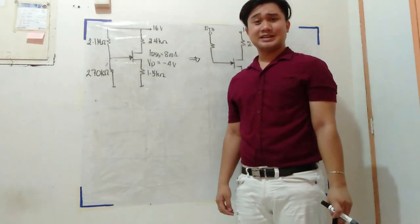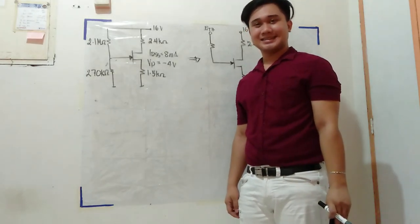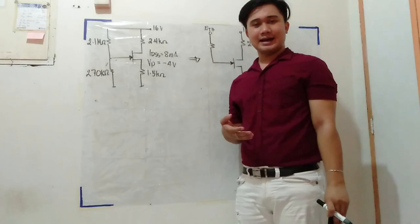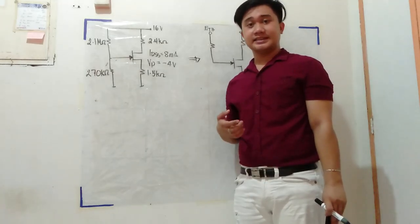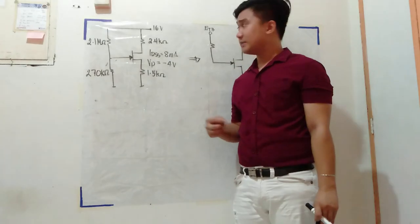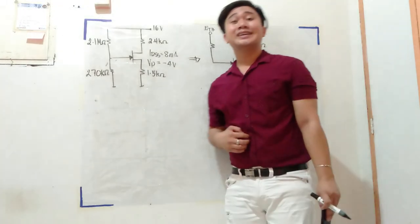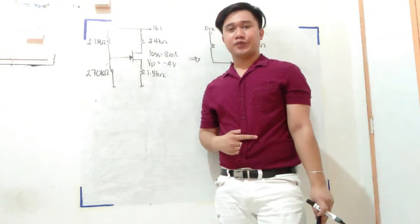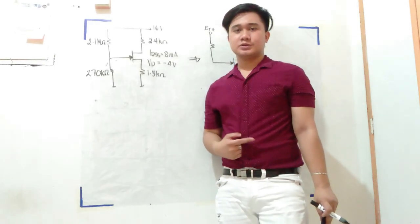So we have here now a voltage divider bias. How to solve voltage divider bias in BJT is the same way to solve voltage divider bias in a FET.